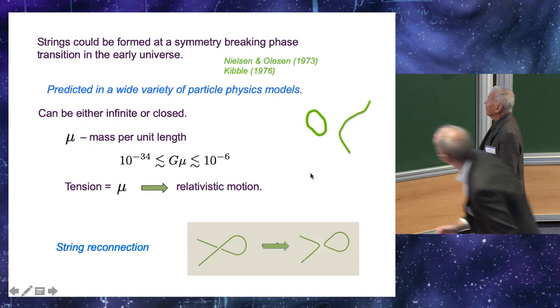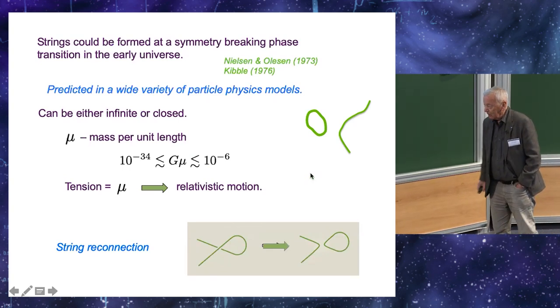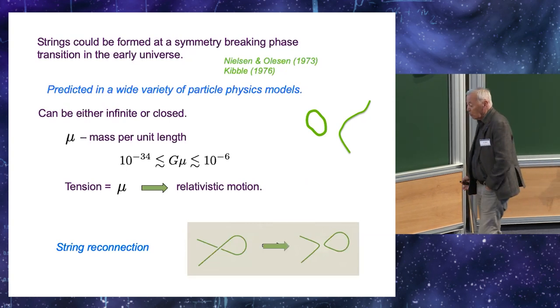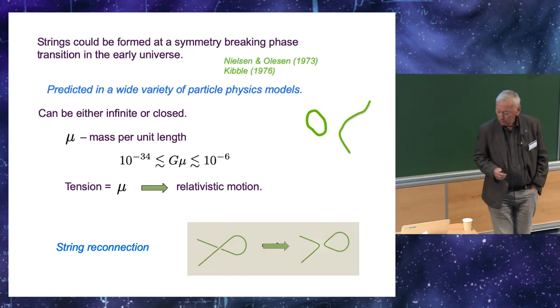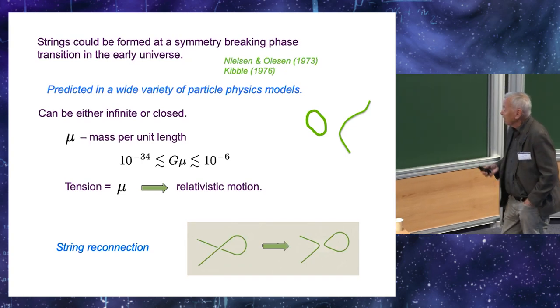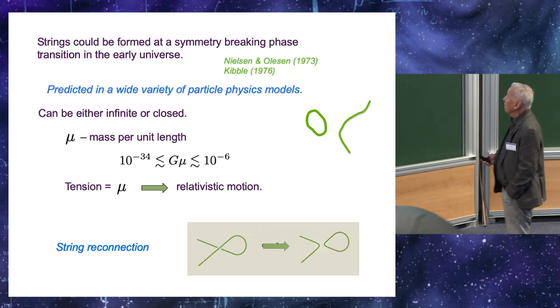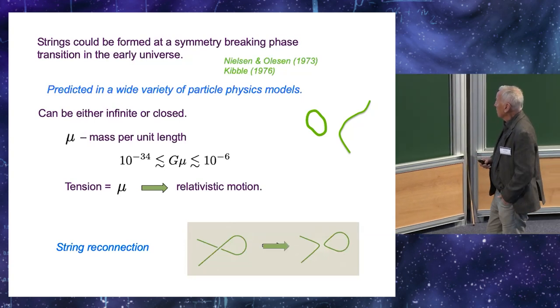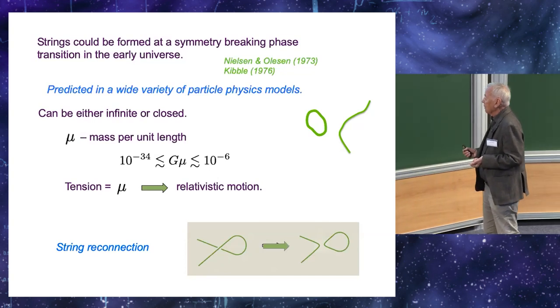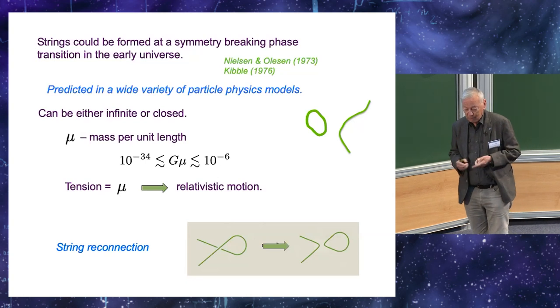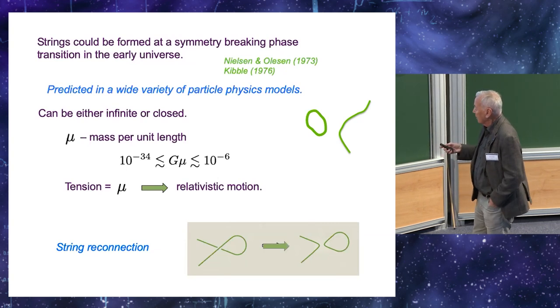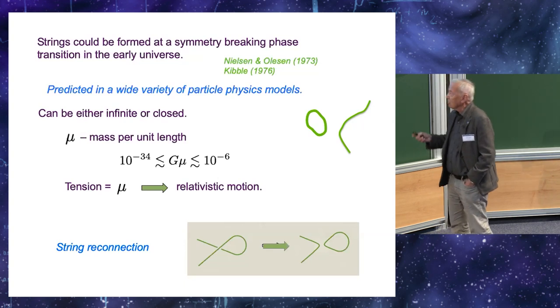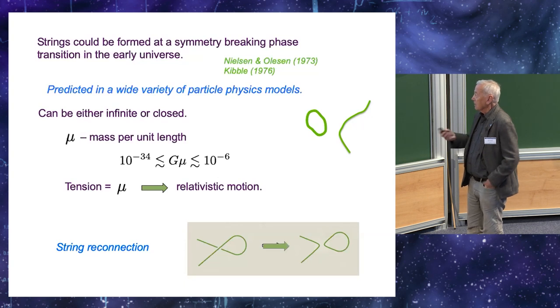First let me briefly review some relevant properties of cosmic strings. Strings could be formed at symmetry breaking phase transitions in the early universe and they are predicted in a wide class of elementary particle models. The strings are linear topological defects. They don't have ends. They can be either from closed loops or extend to infinity. The main parameter characterizing the strings is the mass per unit length, which will denote mu, and it's determined mostly by the symmetry breaking energy scale.